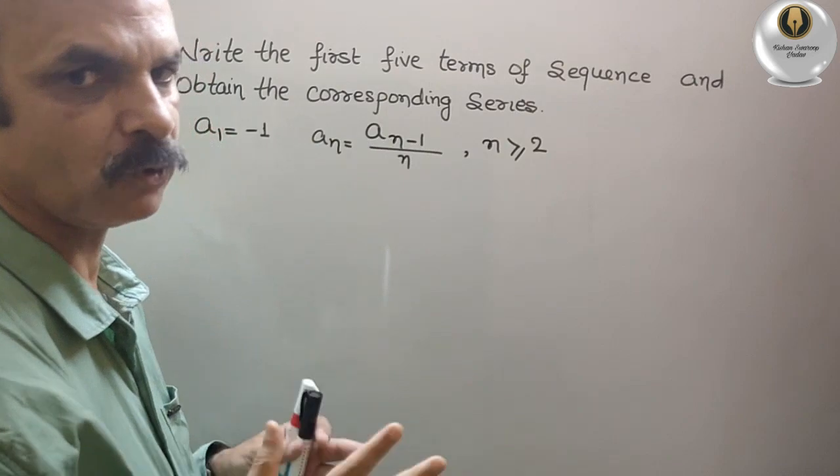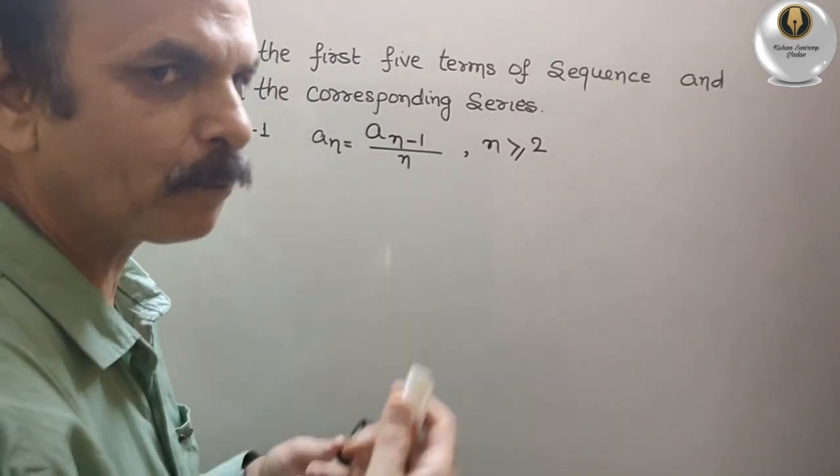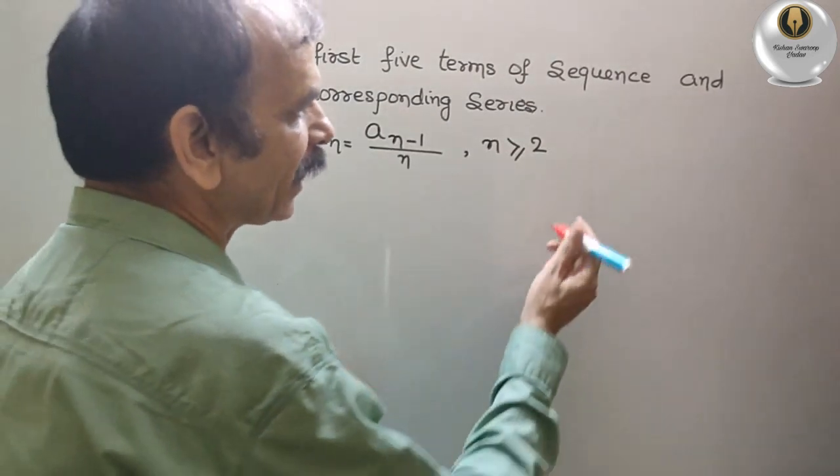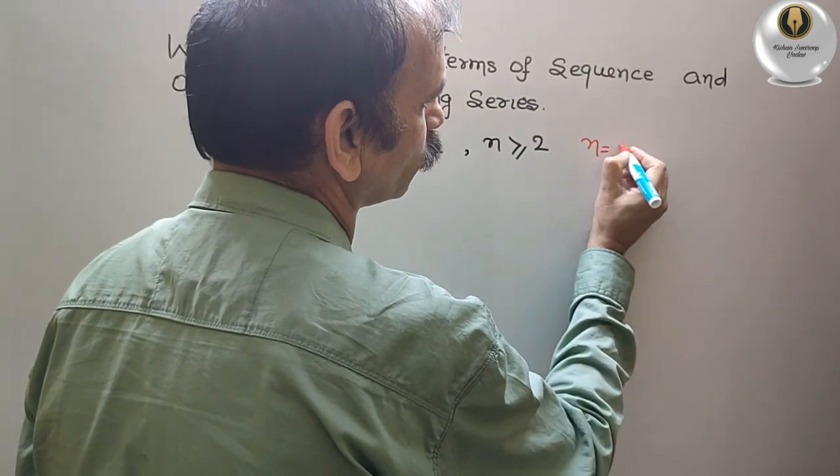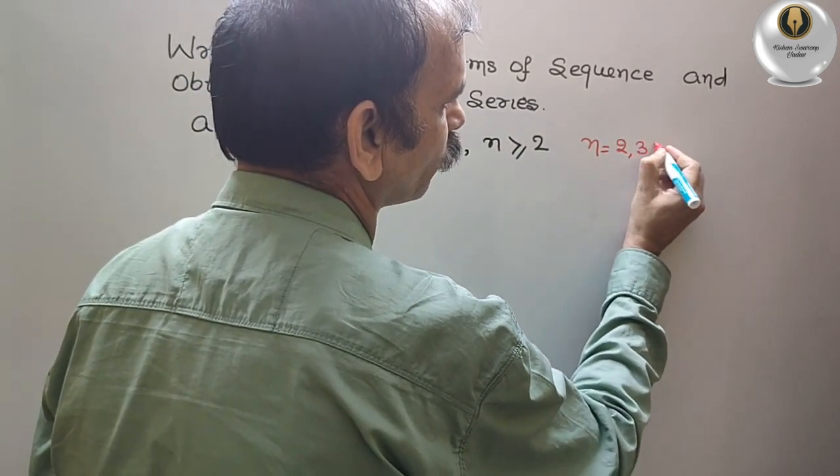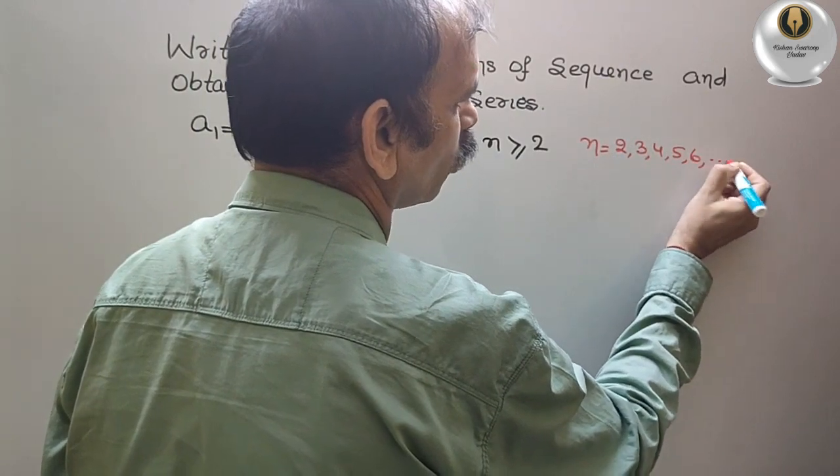So we will find out that. That means n should be 2, 3, 4, 5, 6, and so on.